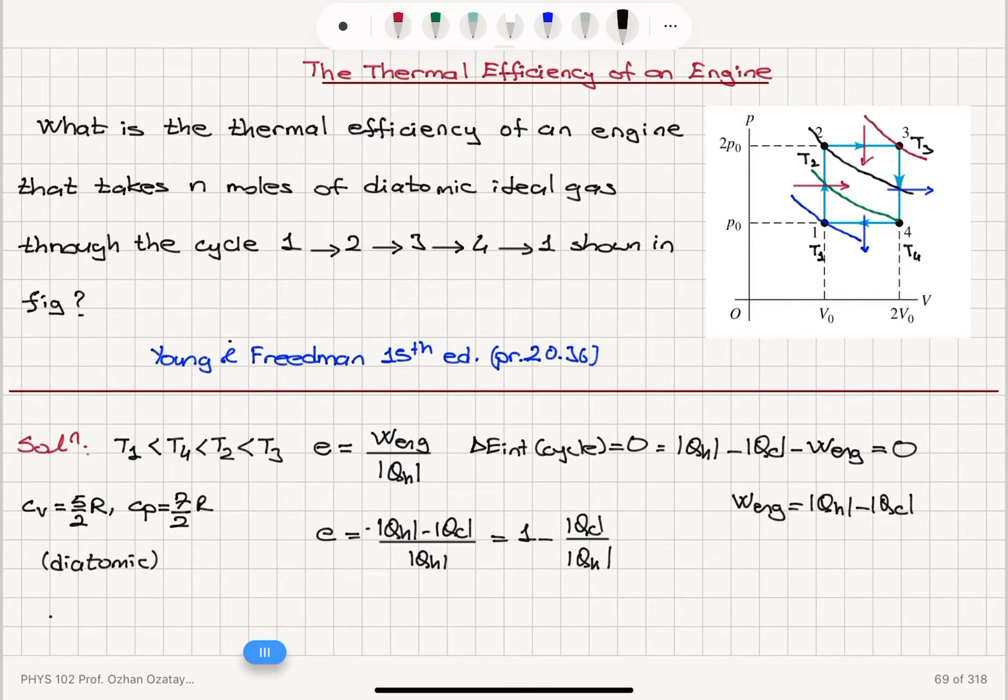I can write the net amount of heat absorbed, which is 1, 2, and 2, 3 segments. For 1 to 2 segment, I have a constant volume process, Ncv, T2 minus T1. And for 2 to 3, I have constant pressure process, Ncp, T3 minus T2. Cv is 5 over 2R, so 5 over 2NR.